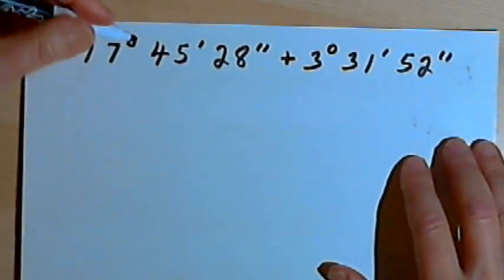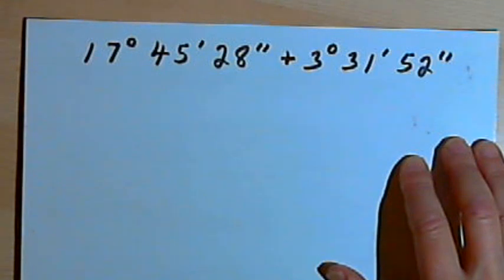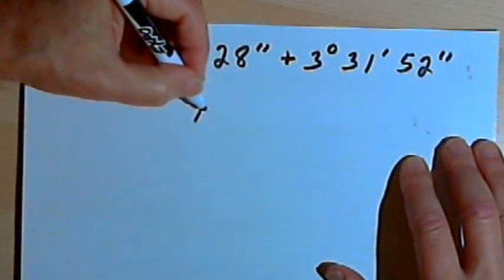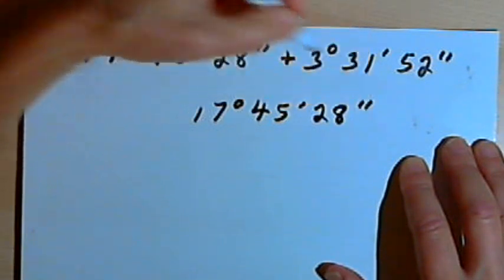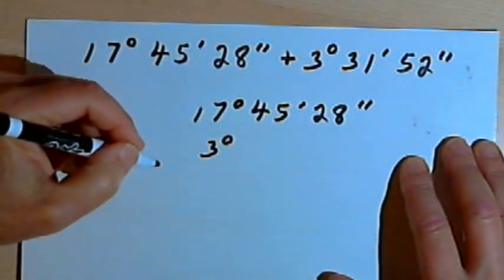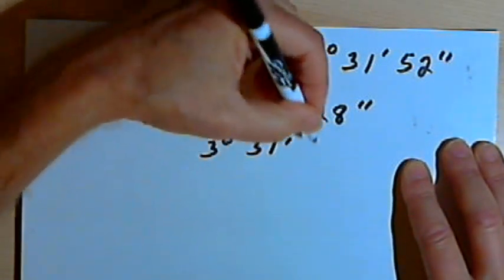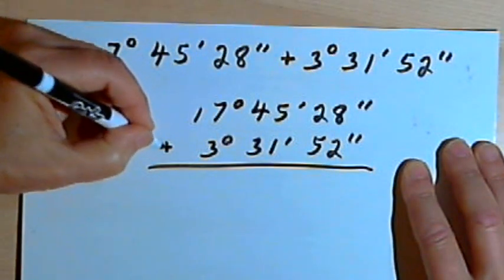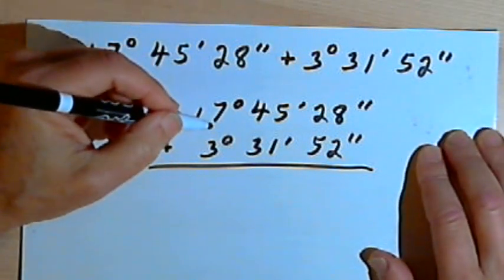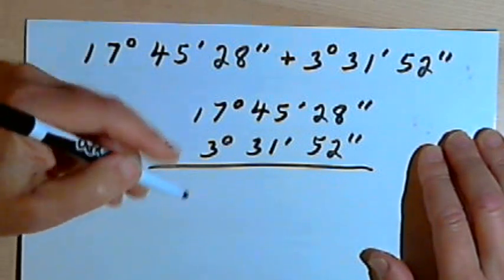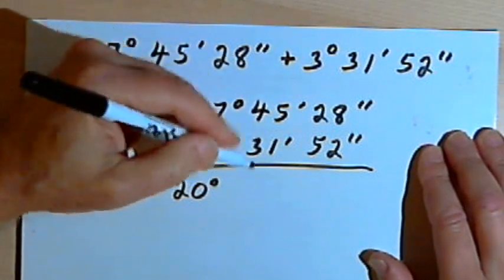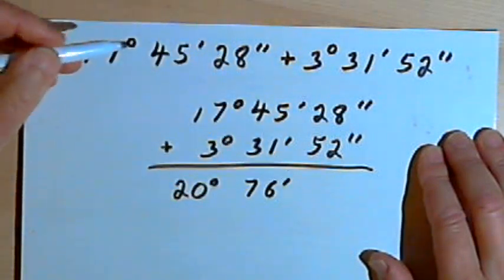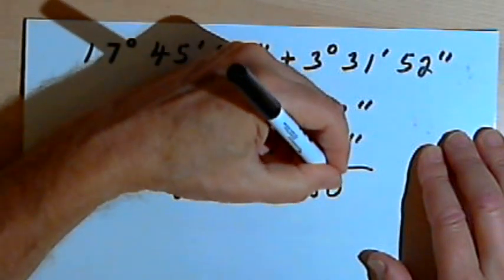Let's try an addition problem. We'll add two angles measured in degrees, minutes, and seconds. I write them one under the other: 17 degrees, 45 minutes, 28 seconds, plus 3 degrees, 31 minutes, 52 seconds. Adding each unit separately: degrees give 20, minutes give 76, and seconds give 80.